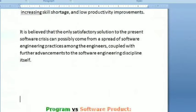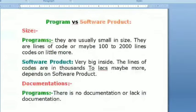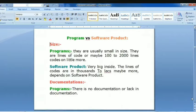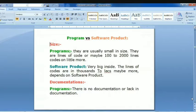The next question is programs versus software product — the difference between programs and software products. First difference is size. Programs are generally small in size, with maybe 100 to 2000 lines of code. Software products are very large in size, with lines of code ranging from 1000 to lakhs or more, depending on the software product. This is the first difference between programs and software products based on size.